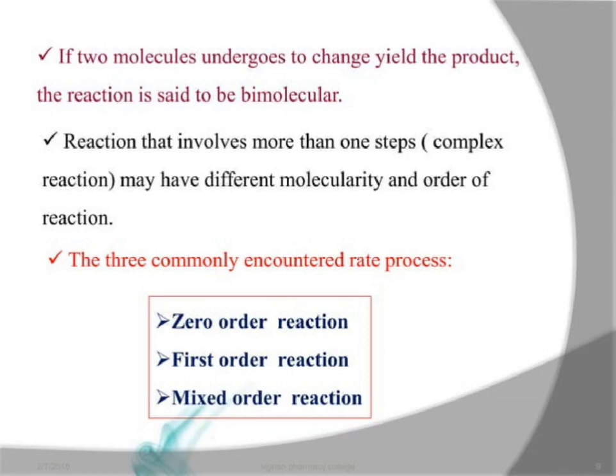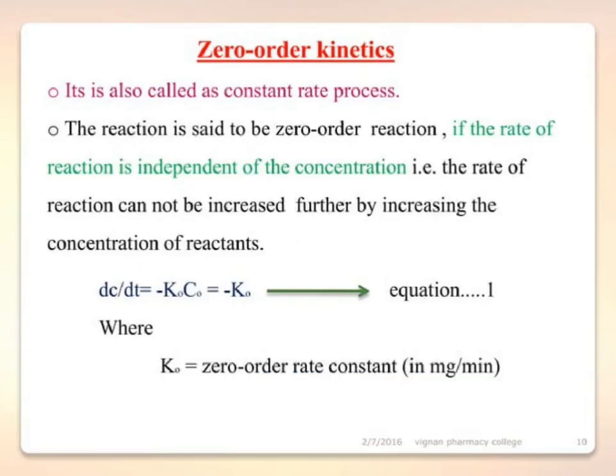The three commonly encountered rate processes are: zero order reaction, first order reaction, and mixed order reaction. Zero order kinetics is also called a constant rate process. A reaction is said to be zero order if the rate of reaction is independent of concentration — i.e., the rate cannot be increased further by increasing the concentration of reactants. The equation is: dR/dt = k0·C = k0, where k0 is the zero order rate constant in mg/min.